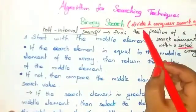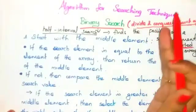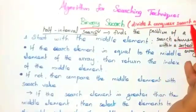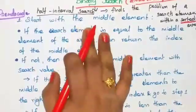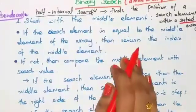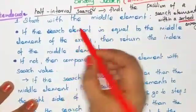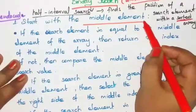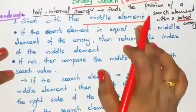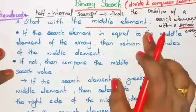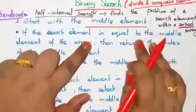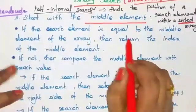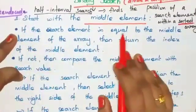In binary search you divide the array elements into half, which is why it is called the divide and conquer search algorithm. The pseudocode: first, start with the middle element, not from the beginning. To find the middle element, use the mid formula.